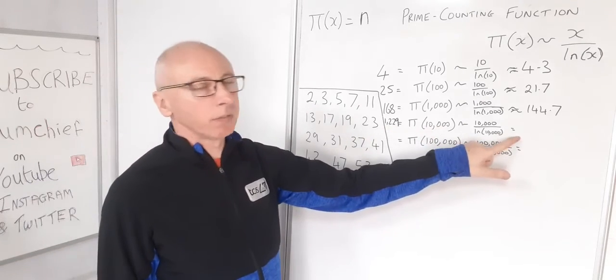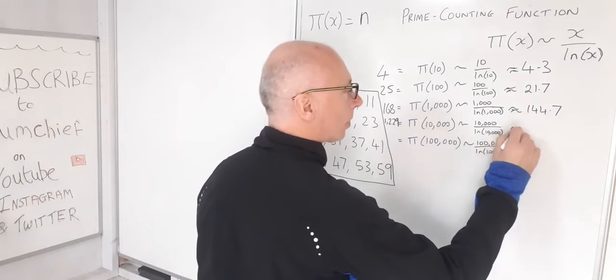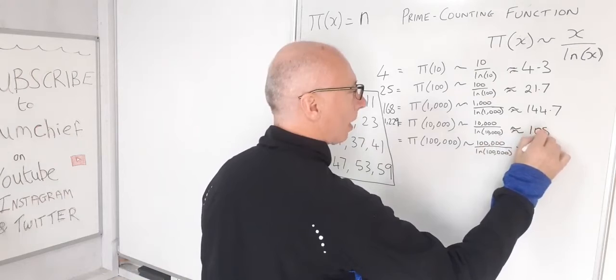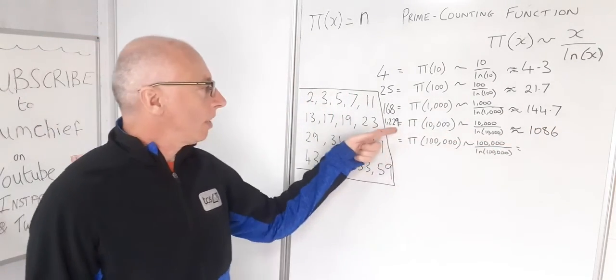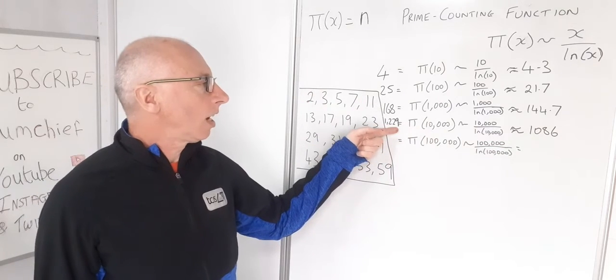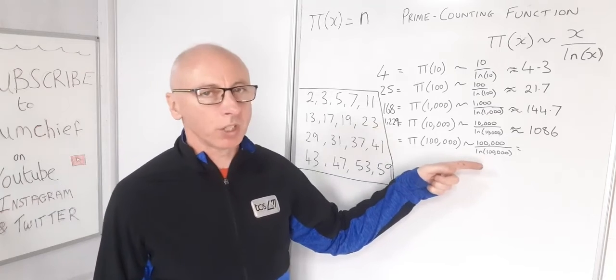What does our approximation formula give us? If you type that into our calculator, we'll get something that's approximately 1,086. Again, that's moving in the right direction, but it's not close enough really to 1,229 for our formula to be working just yet.